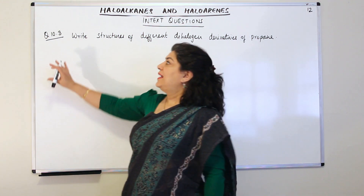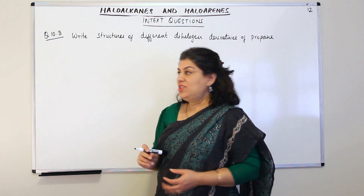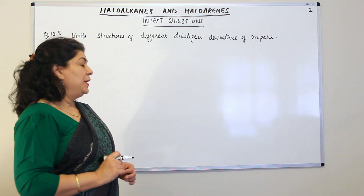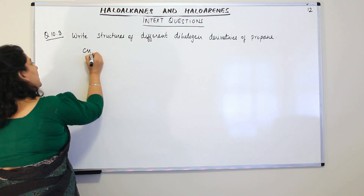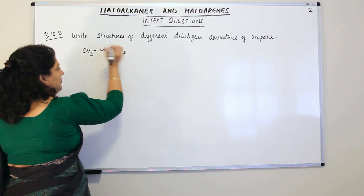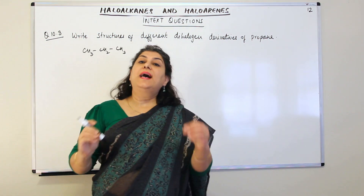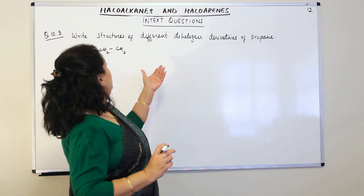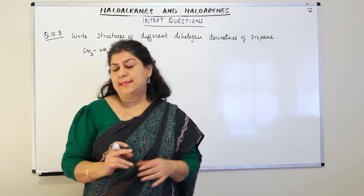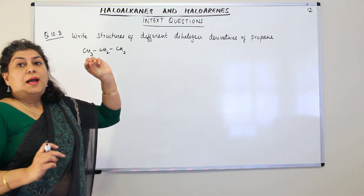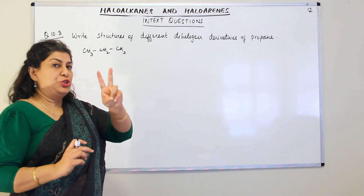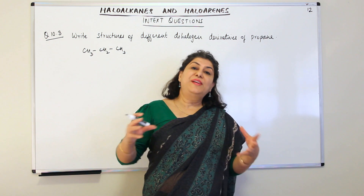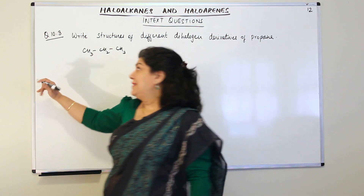Now this is question 10.3. The question reads: write the structures of different dihalogen derivatives of propane. Propane is CH₃CH₂CH₃. You need dihalogen derivatives, meaning two of the hydrogens have to be replaced by a halogen atom, say chlorine. We need to find all the different isomers that can be prepared on this basis — what are the different positions available for substitution?